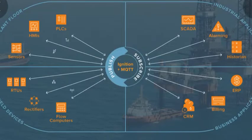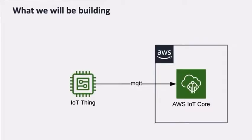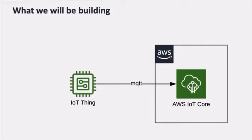We will cover how to create a first thing, connect the device to it by creating a policy and attaching it. Here you can see a simple architecture with a device and a cloud and how it is connected to the IoT Core. MQTT is a publish and subscribe protocol that allows edge-of-network devices to publish to a broker.